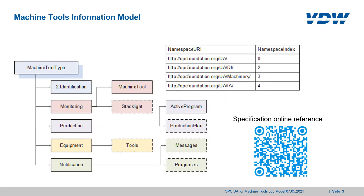This slide gives an overview of the complete machine tools information model. The model revolves around the machine tool type which is subdivided into five parts: identification, monitoring, production, equipment, and notification. For the rest of this presentation we will focus on the production part.